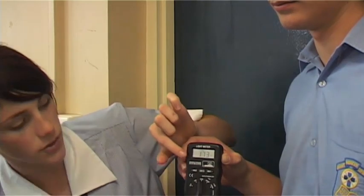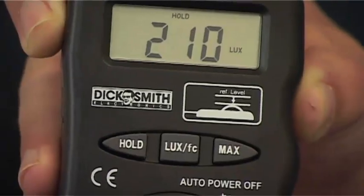Press the hold button to retain the lux reading. The reading is 210 lux. The average classroom needs between 240 and 400 lux. For reading and writing you need about 400 lux to be able to see properly.